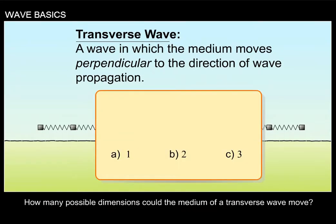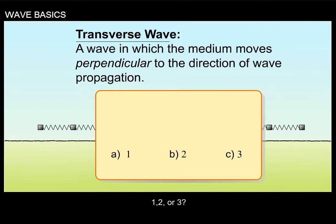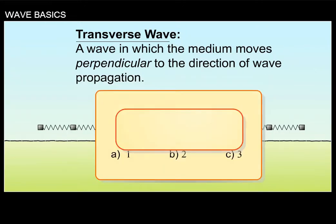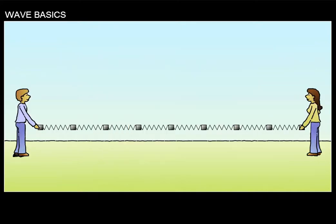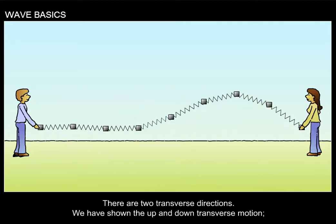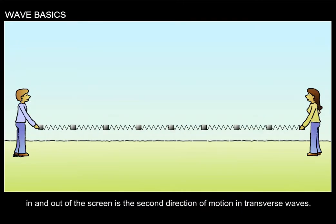How many possible dimensions could the medium of a transverse wave move? One, two, or three. No, one of the three possible dimensions is correct. There are two transverse directions. We have shown the up and down transverse motion. In and out of the screen is the second direction of motion in transverse waves.